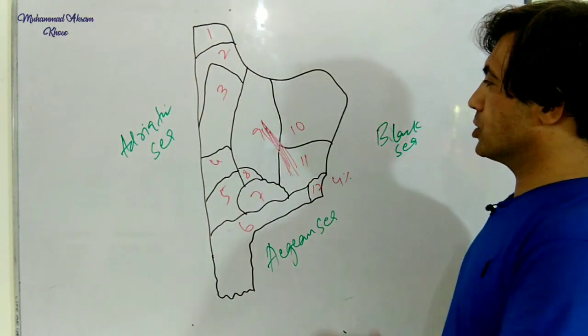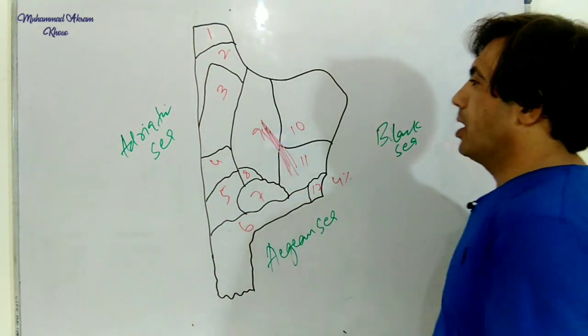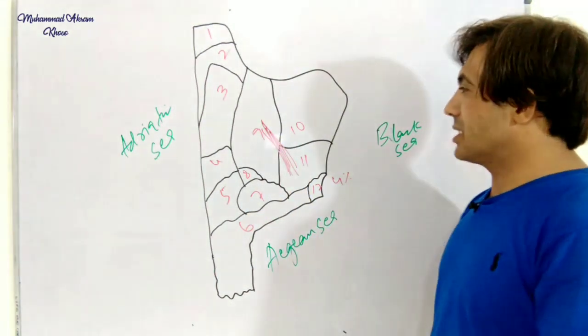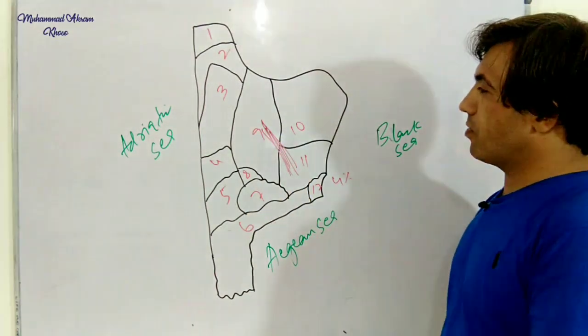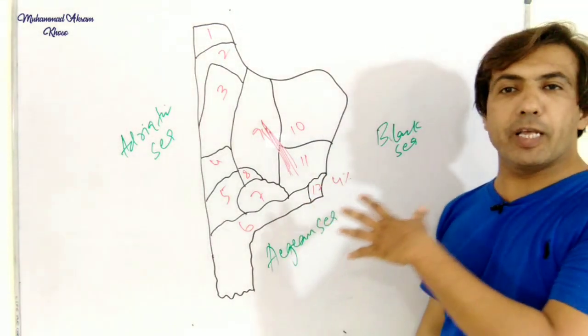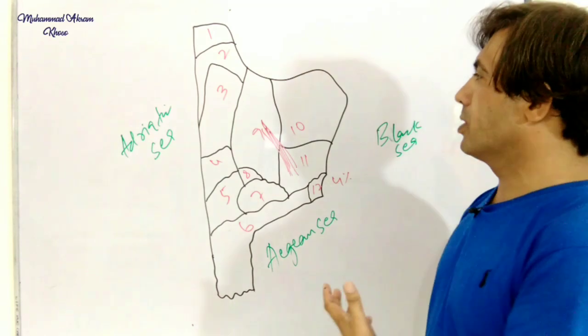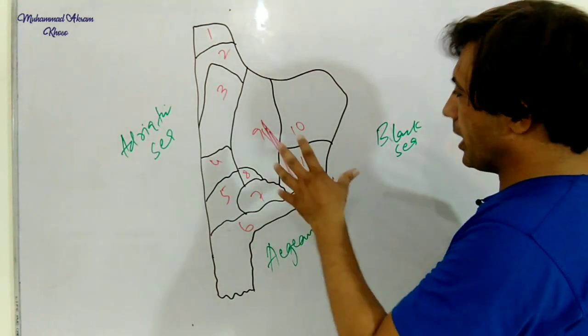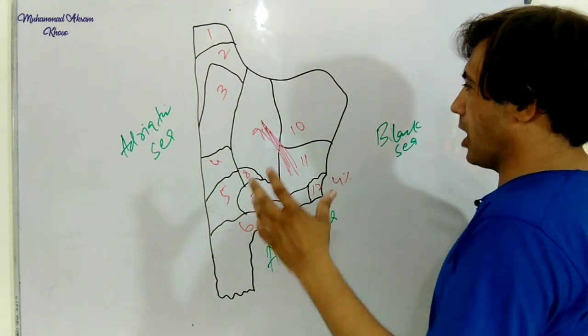Today currently it is the capital city of Serbia, but at that time in 1961, Belgrade was the capital of Yugoslavia. This is what we have regarding the Balkan Peninsula.